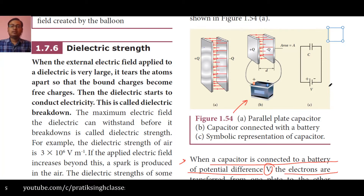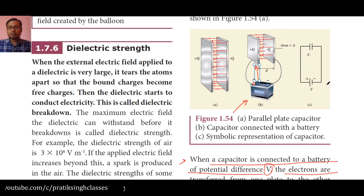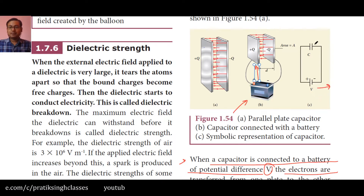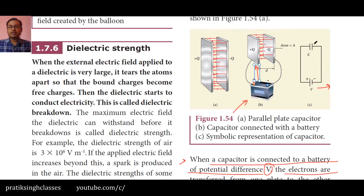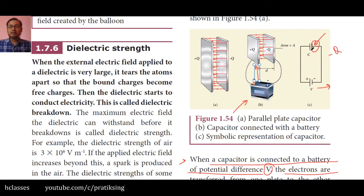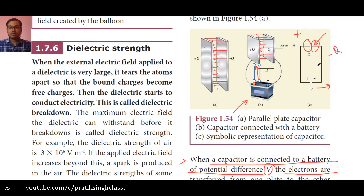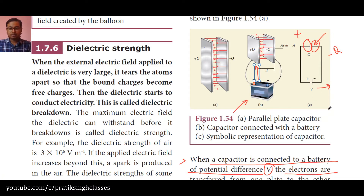You know that charges flow from the negative terminal to the positive terminal outside the battery. So the plate connected to the negative terminal becomes negatively charged with charge −Q, and the other plate becomes positively charged with charge +Q. I hope you have understood this theory and concept very well. Now let us move back to the theory part again.